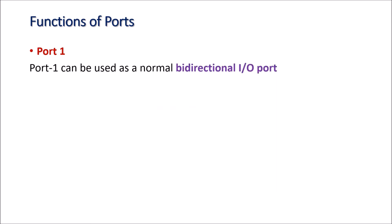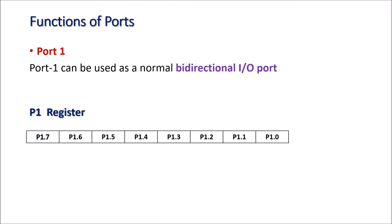The second port of the 8051 is port 1. Port 1 can be used only as a normal bidirectional I/O port, meaning we can connect input or output devices to this port. P1 is the register associated with port 1. Individual bits can be accessed — read or written — and these bits are named P1.0, P1.1, up to P1.7.